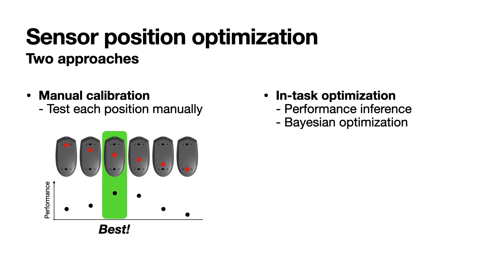So we propose the second approach, in-task optimization. This method consists of two parts. First, performance inference. Second, Bayesian optimization. First, you set a sensor position, do a normal task, and the performance inference method will measure the performance from the task, and Bayesian optimizer will infer which will be the best sensor position and suggest the next sensor position to be tested.